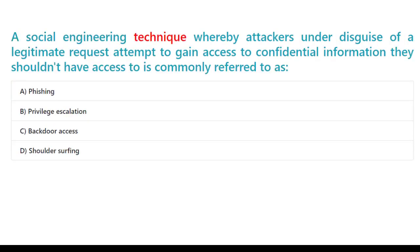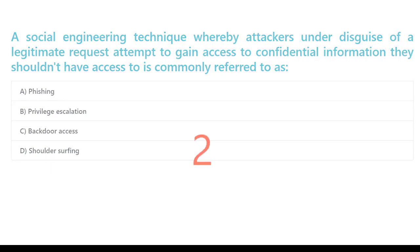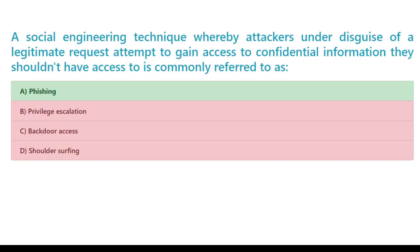A social engineering technique whereby attackers, under disguise of a legitimate request, attempt to gain access to confidential information they shouldn't have access to is commonly referred to as: A. Phishing. B. Privilege escalation. C. Backdoor access. D. Shoulder surfing. The correct answer is A. Phishing.